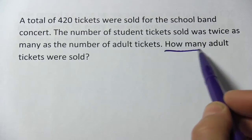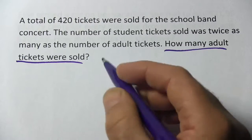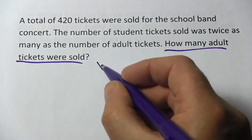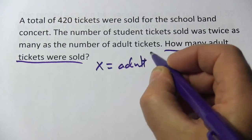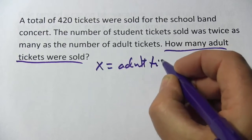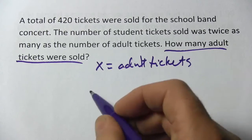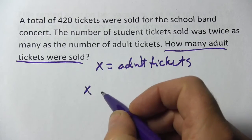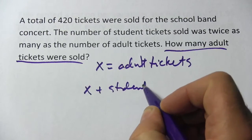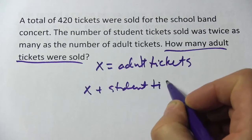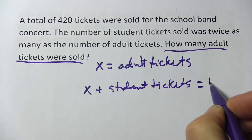With problems like this, I always like to start at the end and see what we're looking for. We're looking for the number of adult tickets. So let's call that x — x is the adult tickets. We know that the number of adult tickets plus the number of student tickets would be the total number of tickets sold, and that is 420.